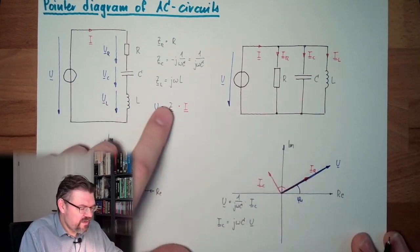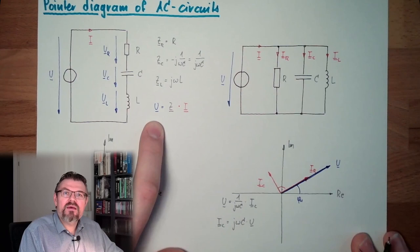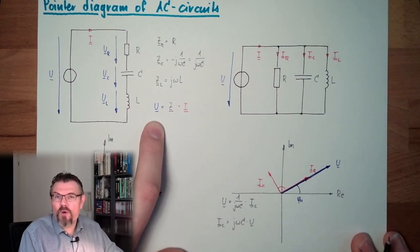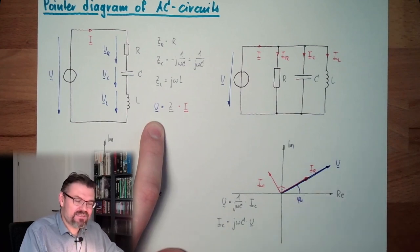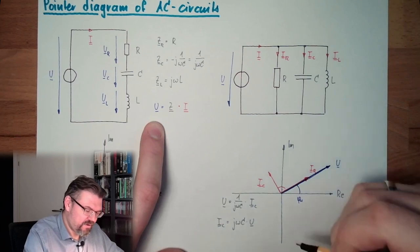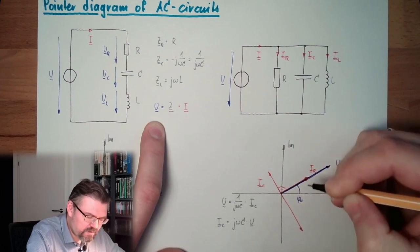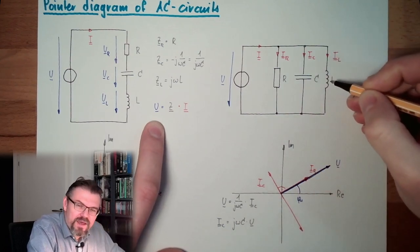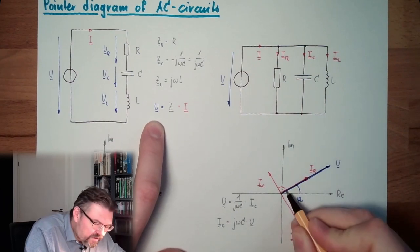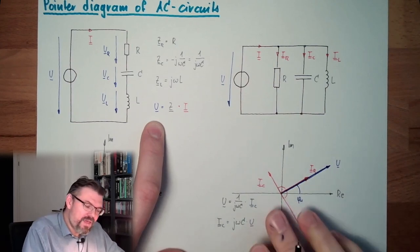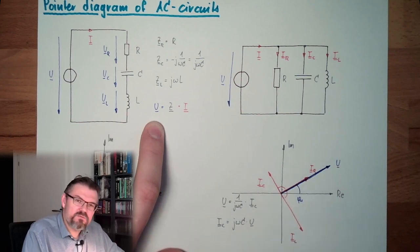And let's have a look, what is IL? If here we have J omega, we divide by J omega L, so we divide by 90 degrees. And if we divide, we have to subtract the angles. So it's VU minus 90 degrees because we are dividing by J. So here, in this other direction, longer or shorter does depend on omega L. So here we have IL, also 90 degrees but behind the current. We say here the current is behind, here the current is before.